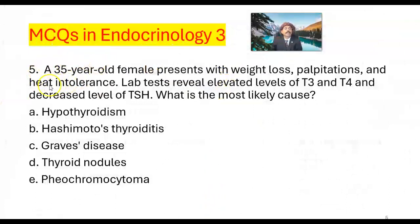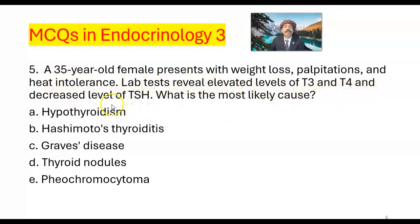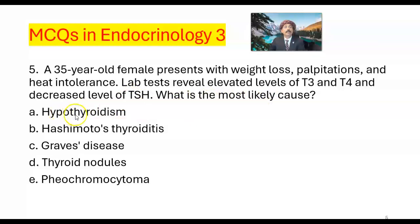Question number 5. A 35-year-old female presents with weight loss, palpitations, and heat intolerance. Lab tests reveal elevated levels of T3 and T4, and decreased level of TSH (thyroid stimulating hormone). Which is the most likely cause? A. Hypothyroidism. B. Hashimoto's thyroiditis. C. Graves' disease. D. Thyroid nodule.